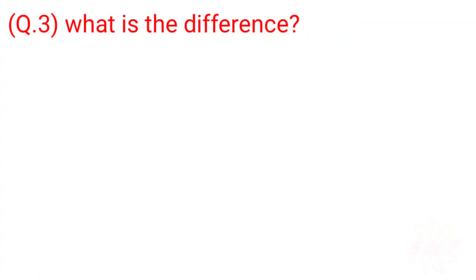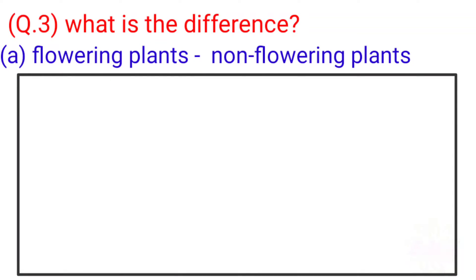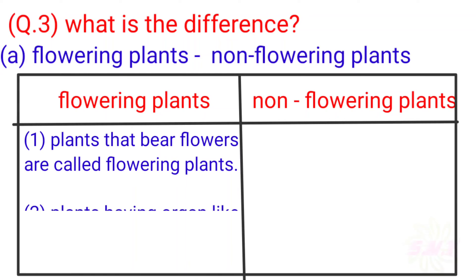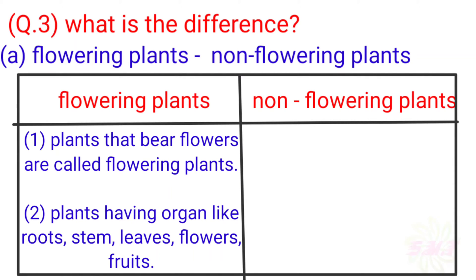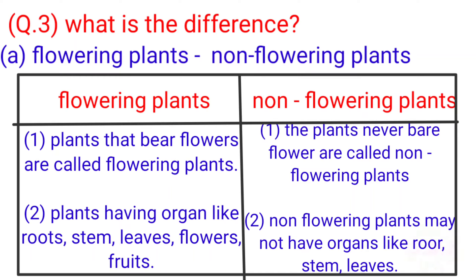Question 3: What is the difference? A: Flowering Plants vs. Non-flowering Plants. Flowering plants: 1. Plants that bear flowers are called flowering plants. 2. They have organs like roots, stems, leaves, flowers, and fruits. Non-flowering plants: 1. Plants that never bear flowers are called non-flowering plants. 2. Non-flowering plants may not have organs like roots, stems, or leaves.